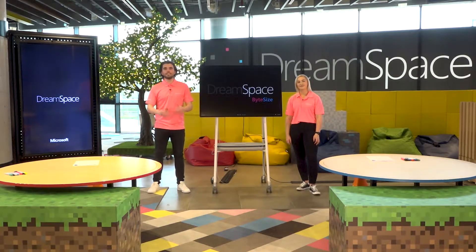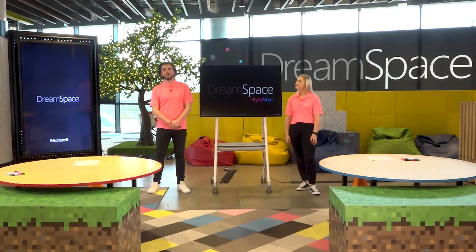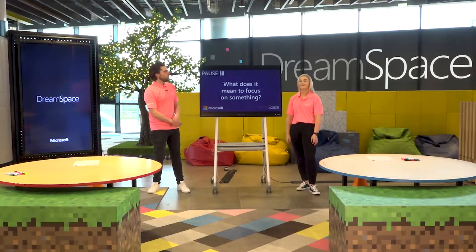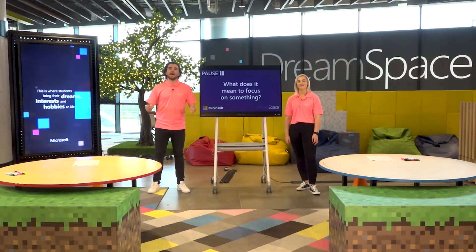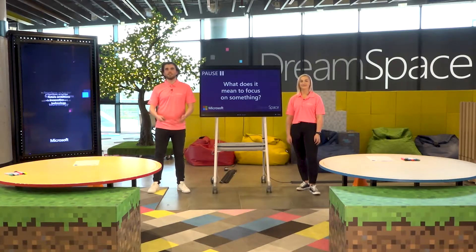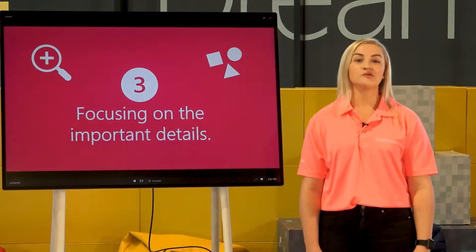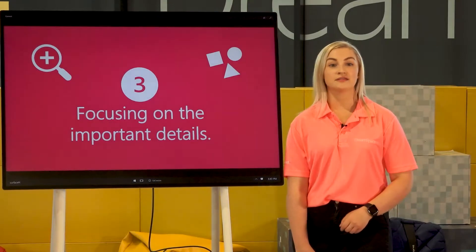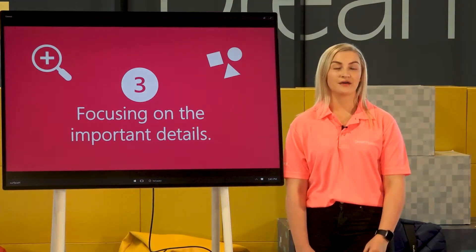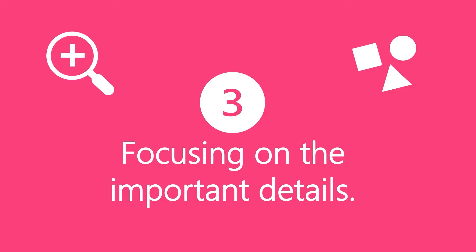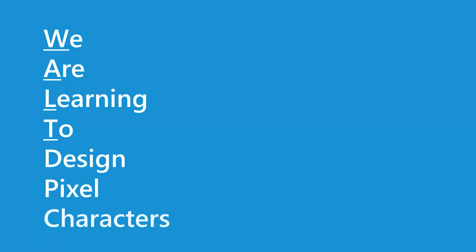But this week we're going to be focusing on the important details and creating our very own pixel characters. But before we do that, we're going to ask you a quick question: what does it mean to focus on something? Now is a good time to pause the video and discuss this with your class or at home. Hopefully you had a great discussion on what it is to focus on something — that's the skill we're developing today: focusing on important details. We're going to do that by setting ourselves a WALT. Today we are learning to design our very own pixel characters.